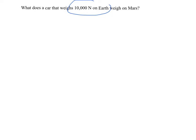So the weight force is mass times G. We said it weighs 10,000 newtons on Earth. We do not know its mass, but we know on Earth it has gravitational pull of 10 meters per second squared. So the mass is 1,000 kilograms.